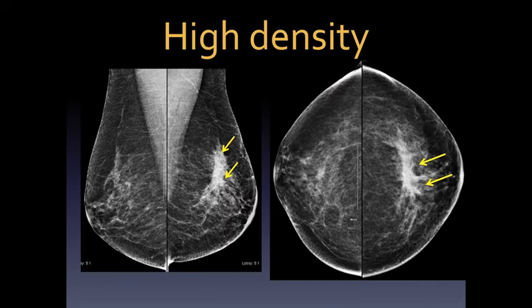Here are some punctate calcifications — very difficult to characterize. There is a small percentage that do turn out to be malignant, so if they're new they should be biopsied. This patient did not have a biopsy, and one year later she developed an invasive ductal carcinoma at that site. So be careful if they're new — you should biopsy them, but they may often be benign.